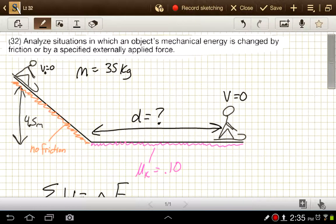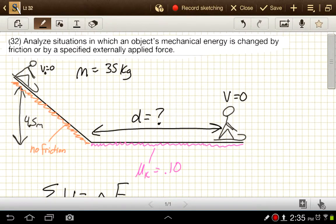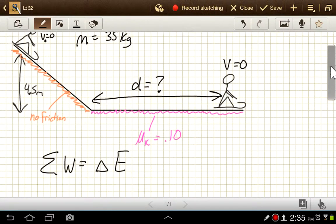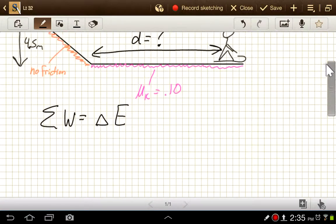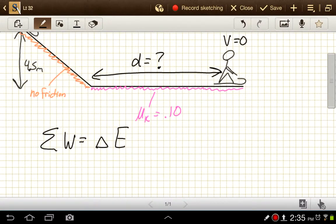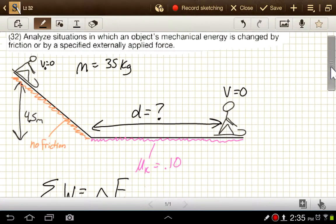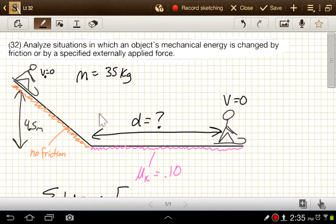Now, before we wrote that as change in kinetic energy, but it can apply more broadly. So our work is going to be done by friction, and that change in energy is going to be equal to the change in, well, we can do this a couple of different ways. We can say at this point the kid would have kinetic energy, and at this point no kinetic energy, so it could be change in kinetic energy.